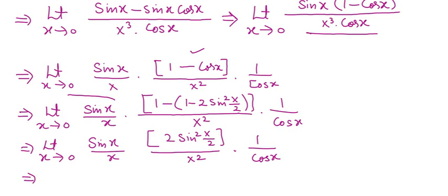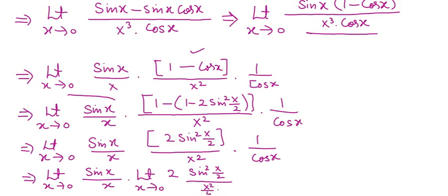We may write this expression like this: limit x tends to 0 of sin x over x, times limit x tends to 0. This is 2 sin squared (x/2). You may write this as x squared by 4 times 4, times limit x tends to 0 of 1 upon cos x.